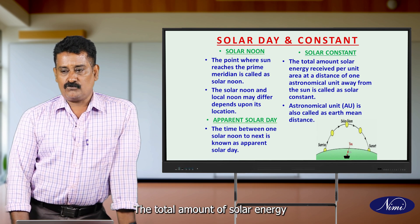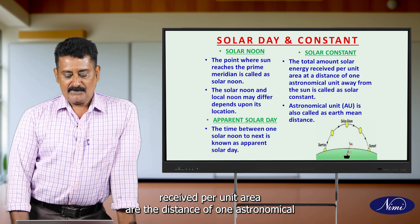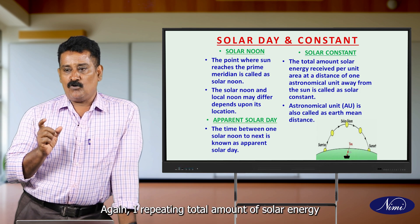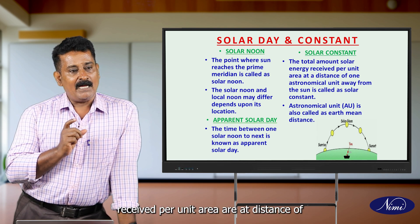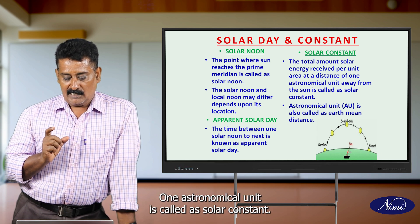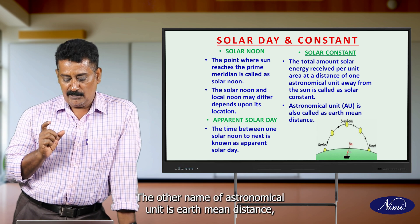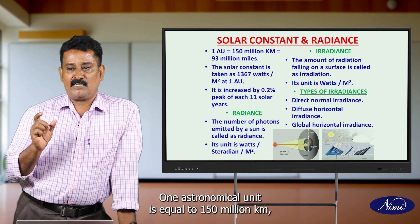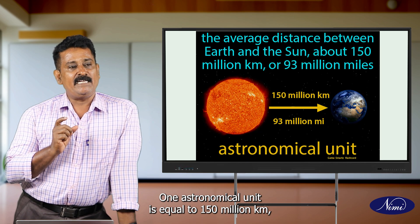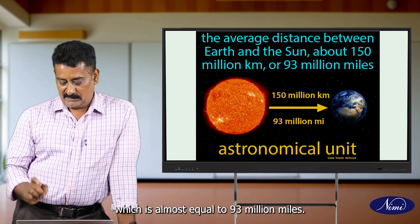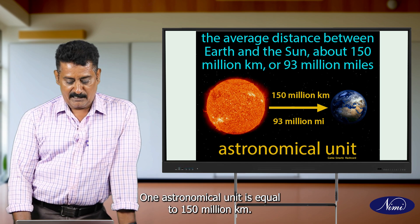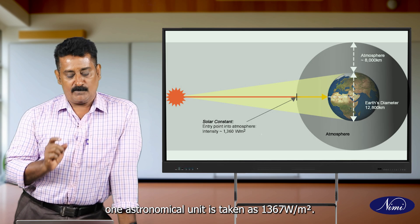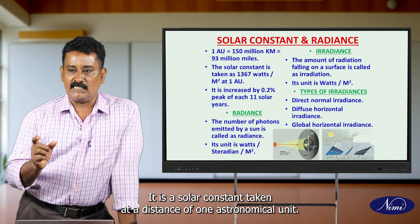What is solar constant? The total amount of solar energy received per unit area at the distance of one astronomical unit away from the sun is called the solar constant. What is astronomical unit? The other name of astronomical unit is Earth mean distance — it is the mean distance of Earth from the sun. One astronomical unit is equal to 150 million kilometers, which is almost equal to 93 million miles. The solar constant at this distance is taken as 1367 watts per meter square. This solar constant increases by 0.2 percent for every 11 solar years.